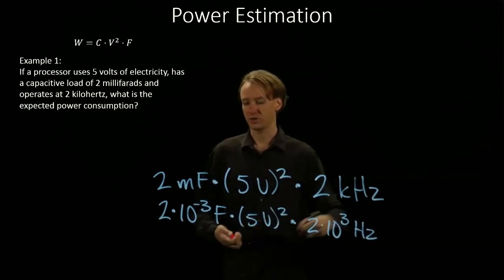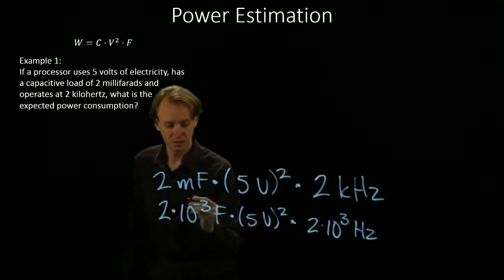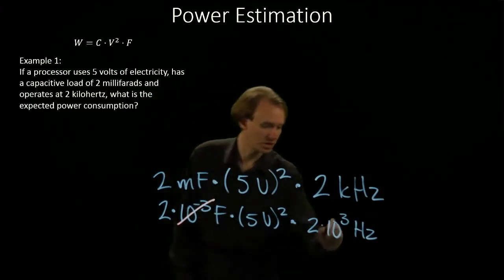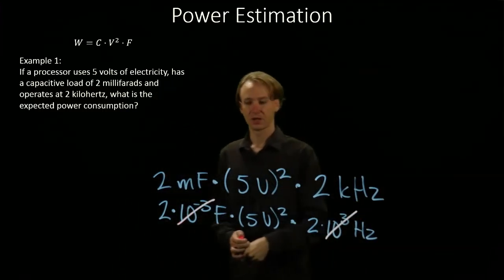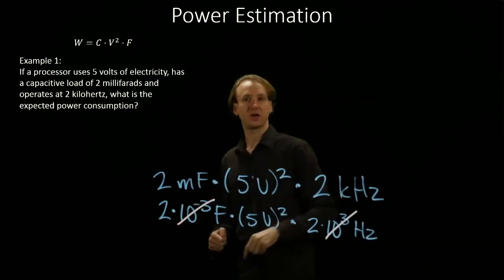Now doing our arithmetic, we would notice that the 10 to the minus third will cancel with the 10 to the third. So our milli effectively cancels out our kilo.